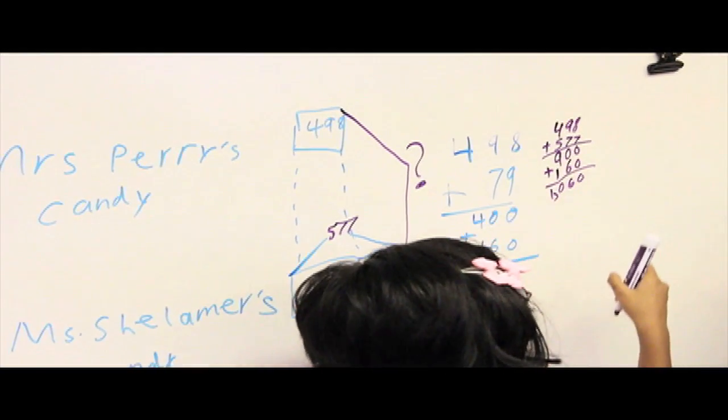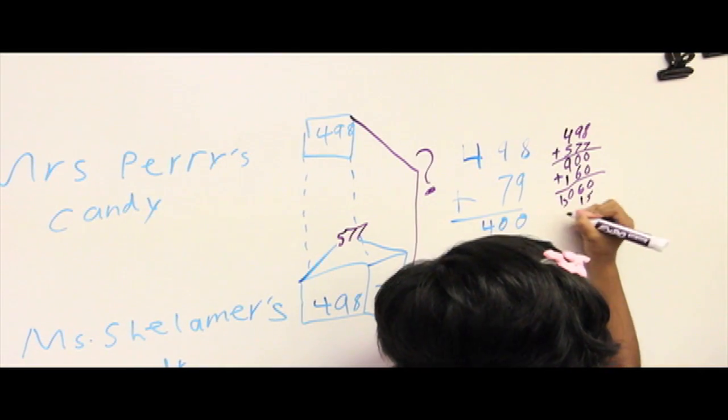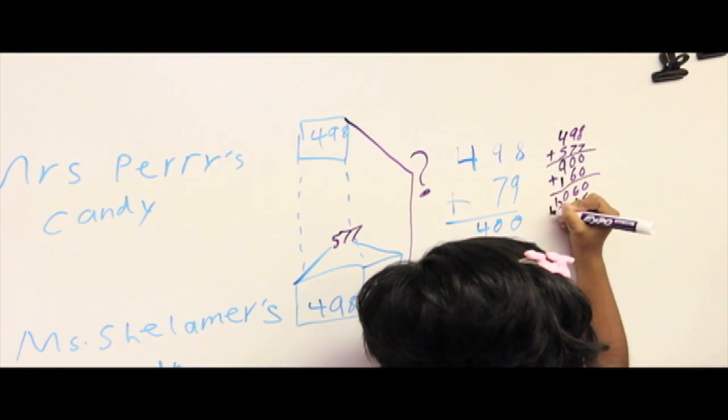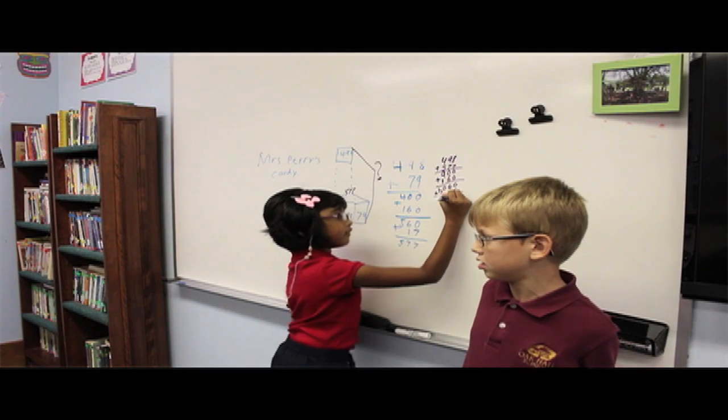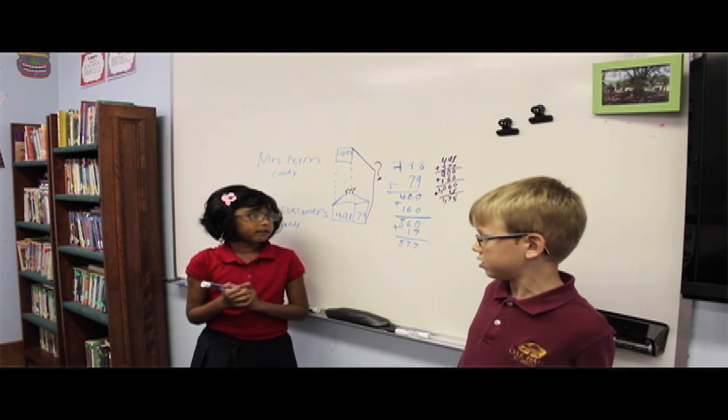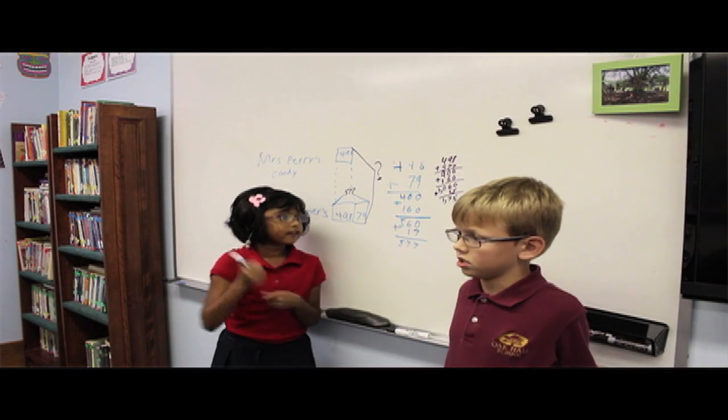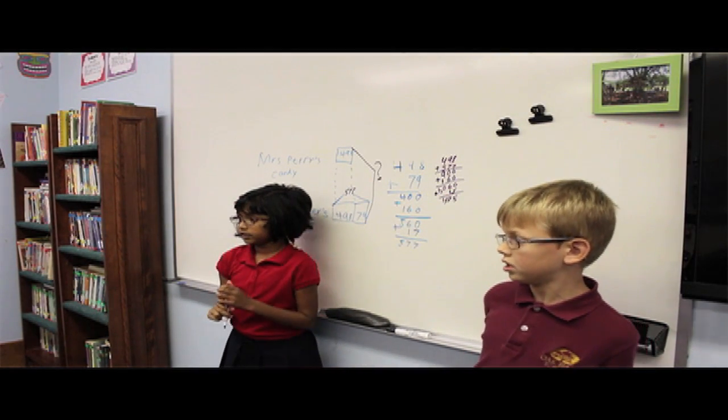8 ones plus 7 ones equals 15 ones. Value 15. Mental math 1075. Mrs. Perry and Mrs. Shalmar have 1,075 pieces of candy all together.